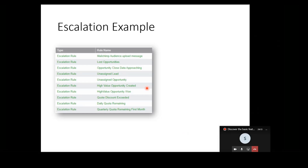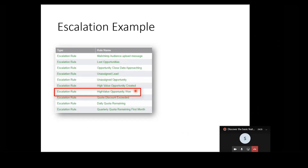This is an example of some of the standard escalations included in CRM. There's one called 'unassigned opportunity,' which might be invoked automatically if an opportunity has been added but not assigned to a particular sales user. 'High value opportunity' looks at where an opportunity has changed its status from in progress to closed and is above a certain value. You can determine what characteristics trigger the escalation and then what happens in those circumstances.